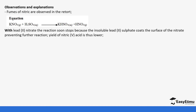If we were to use lead(II) nitrate for this reaction instead of potassium nitrate, the reaction would stop because insoluble lead(II) sulfate would be formed. This insoluble salt coats the lead(II) nitrate and prevents further reaction, so you produce a lesser amount of nitric acid.